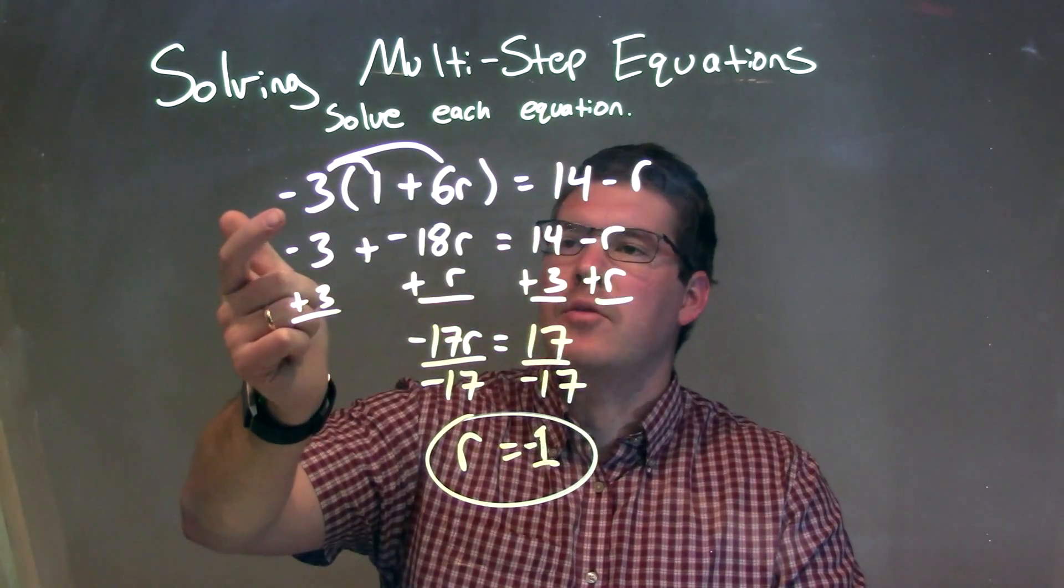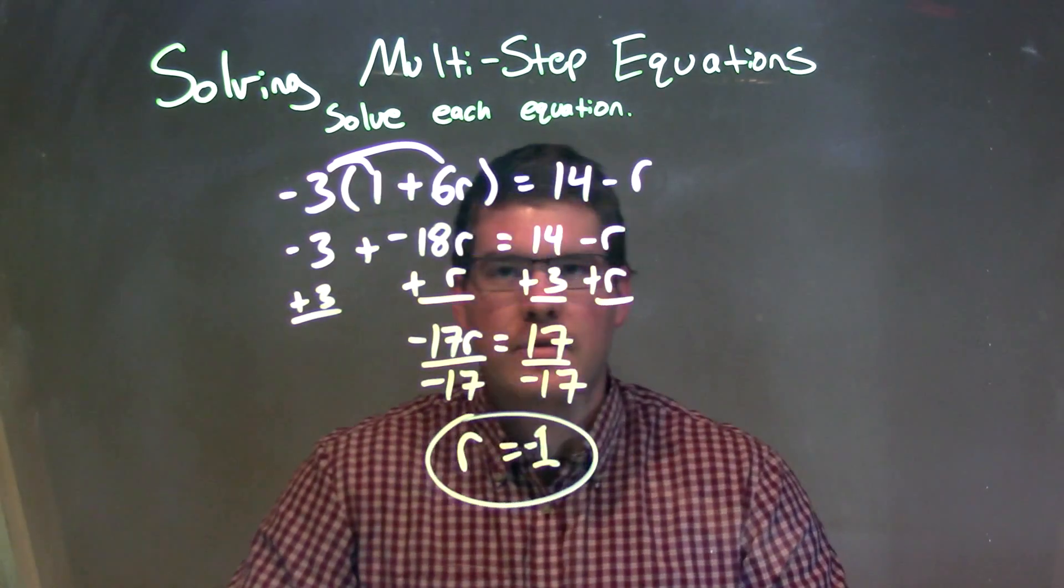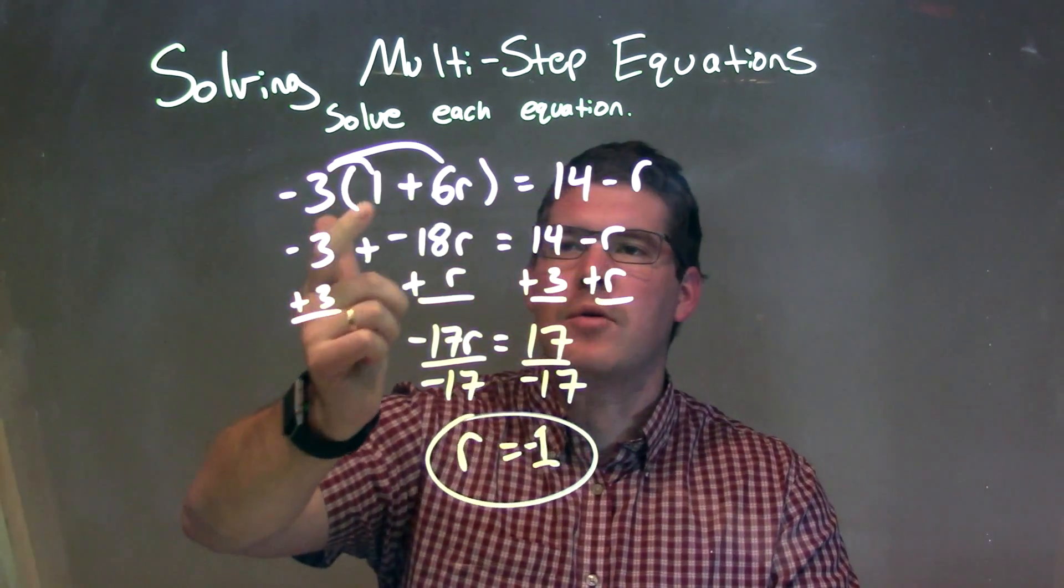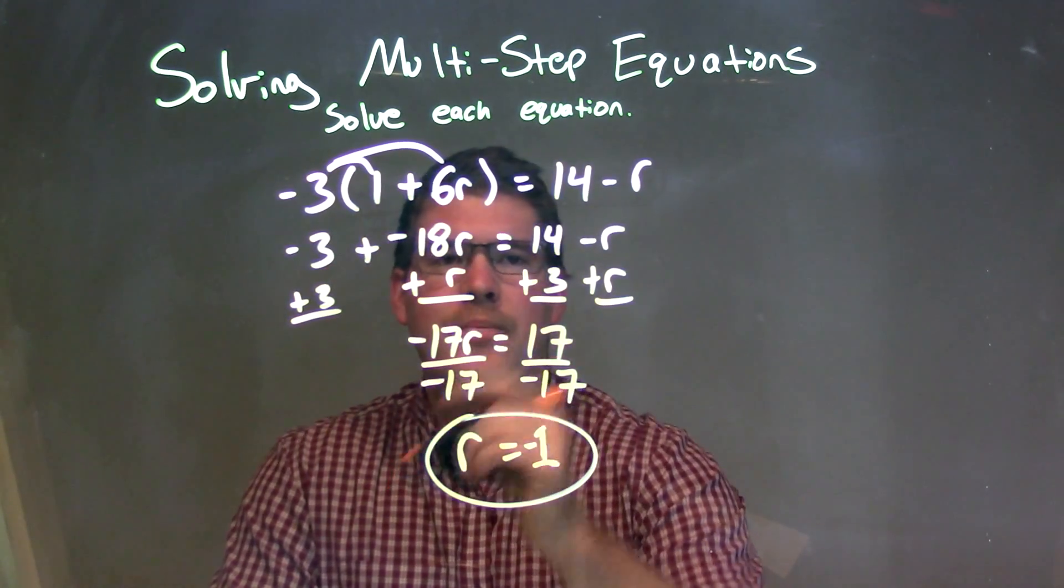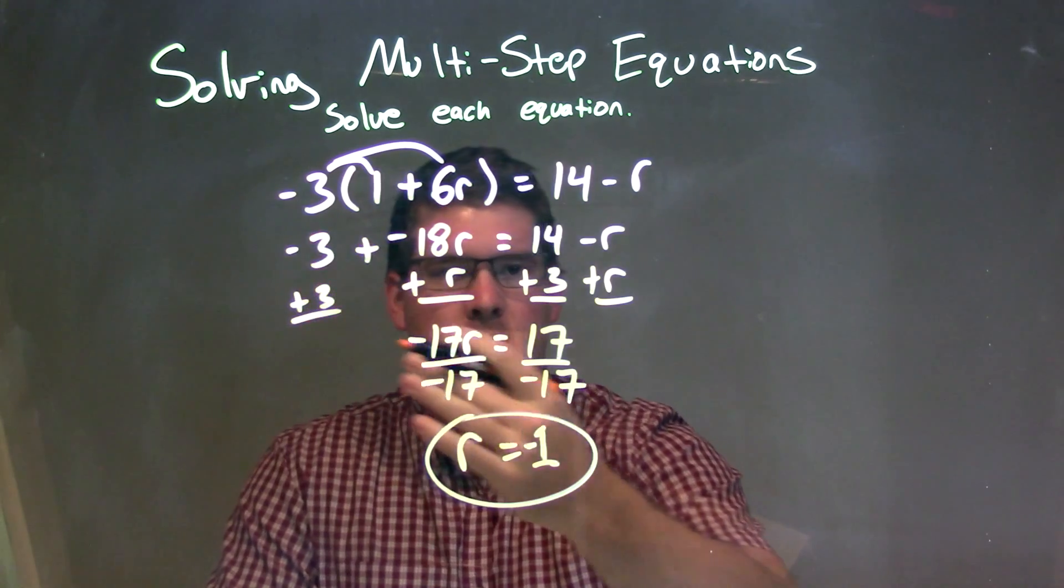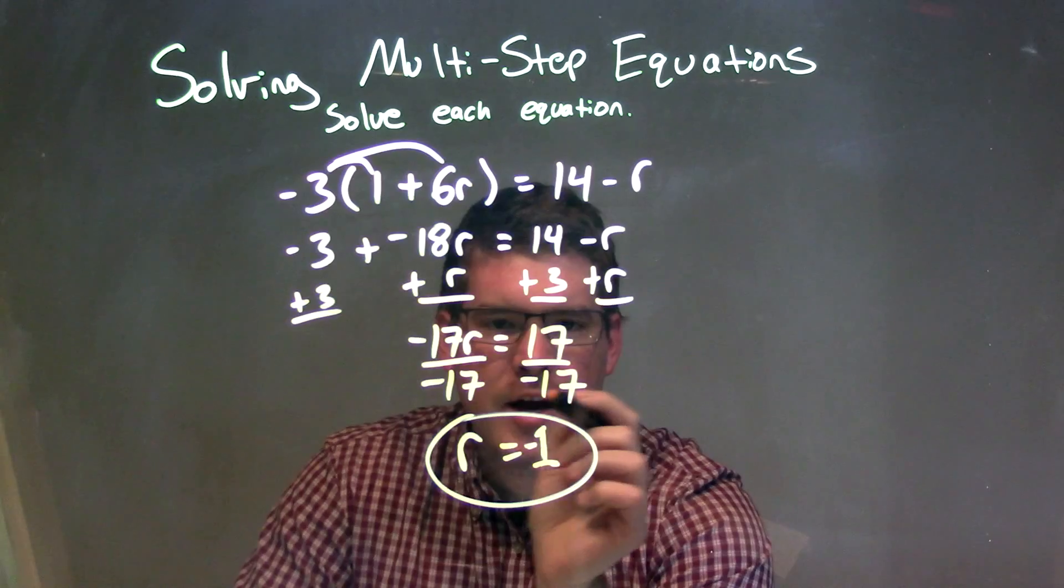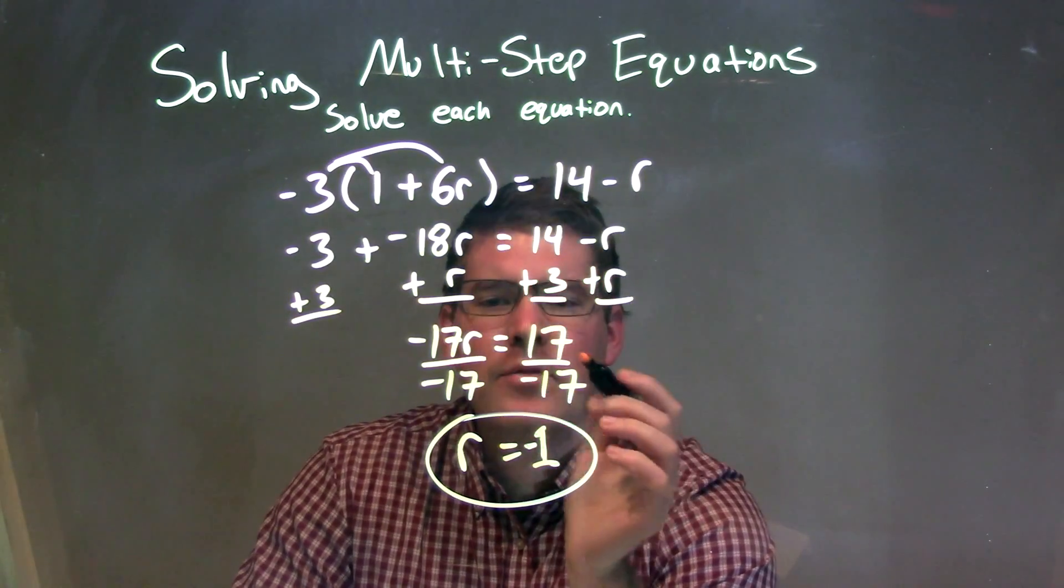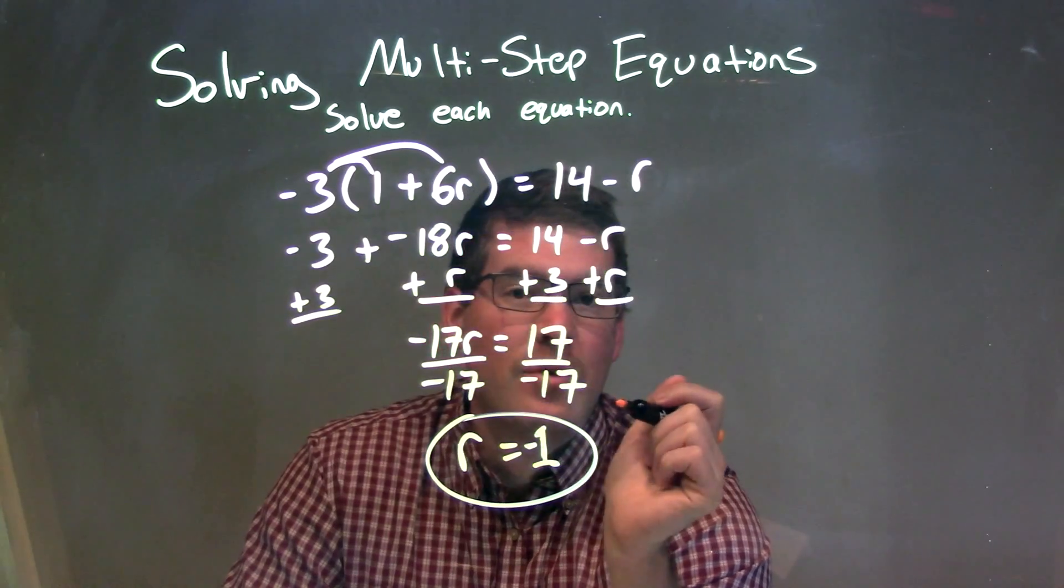So let's recap. We're given negative 3 times the parentheses 1 plus 6r equals 14 minus r. I distributed the negative 3 across to both parts of the parentheses to get negative 3 plus negative 18r. I brought down the 14 minus r. I brought my r's to the left and my numbers to the right, giving me negative 17r equals a positive 17. I then divided by negative 17 to get r by itself, and so our final answer here is r equals negative 1.